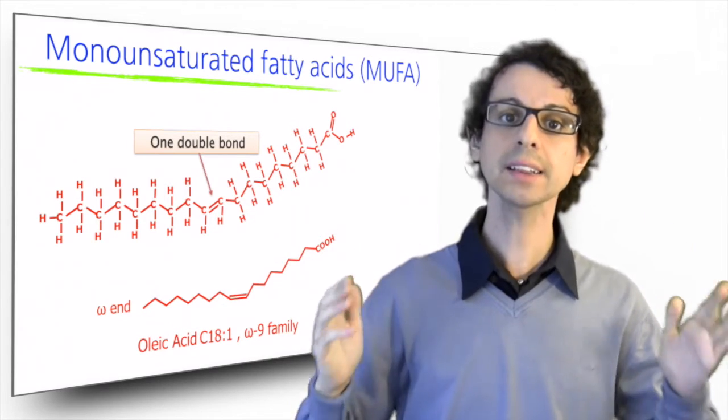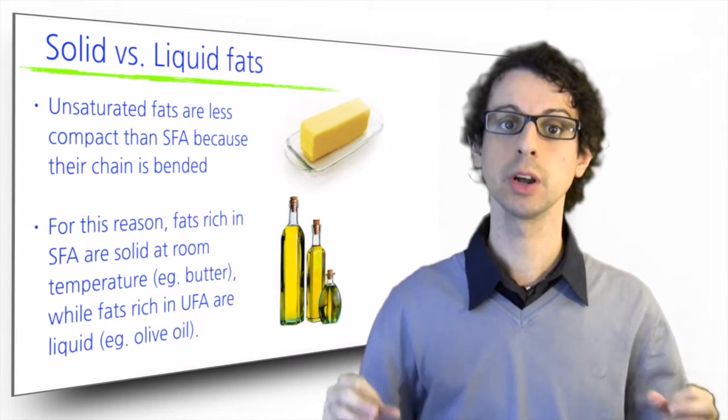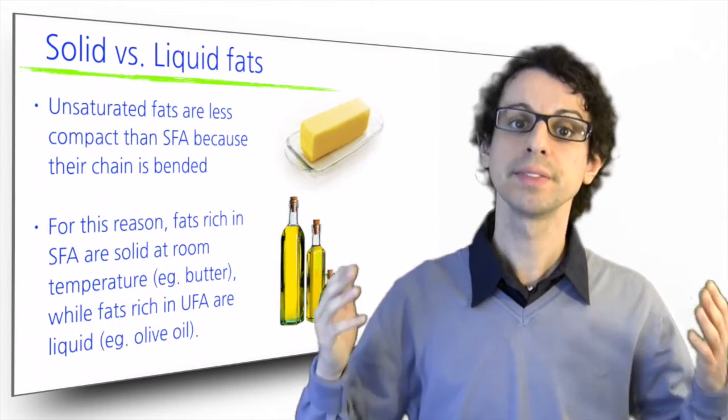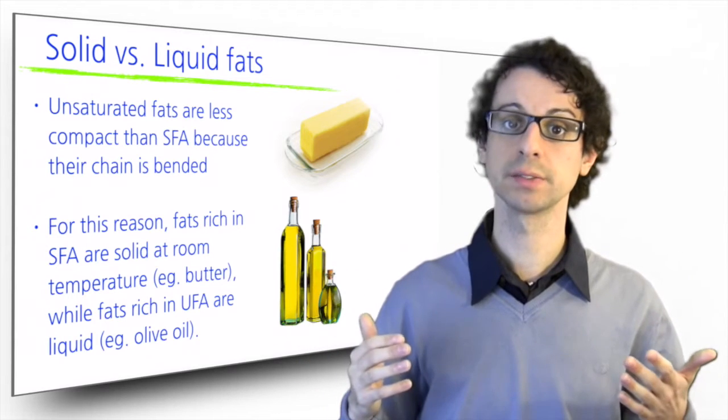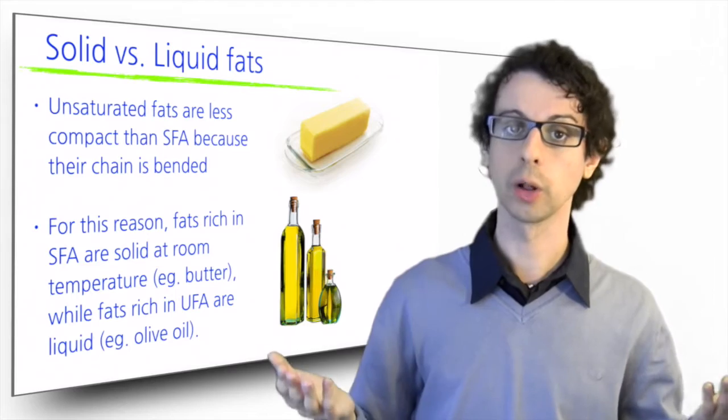Because of this, fats that are rich in saturated fatty acids will be solid at room temperature, for example butter, while fats that are rich in unsaturated fatty acids will be liquid at room temperature, for example olive oil.